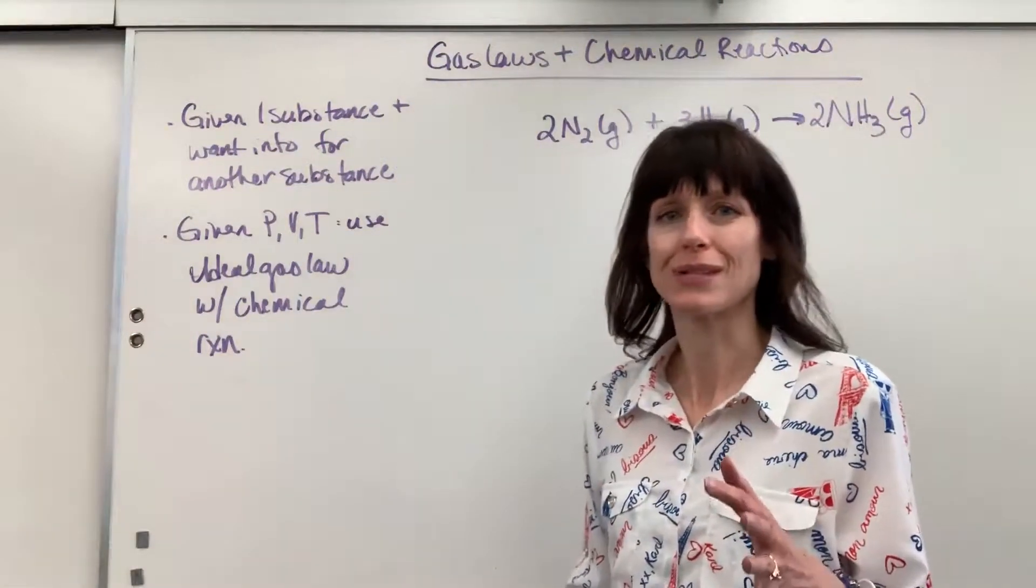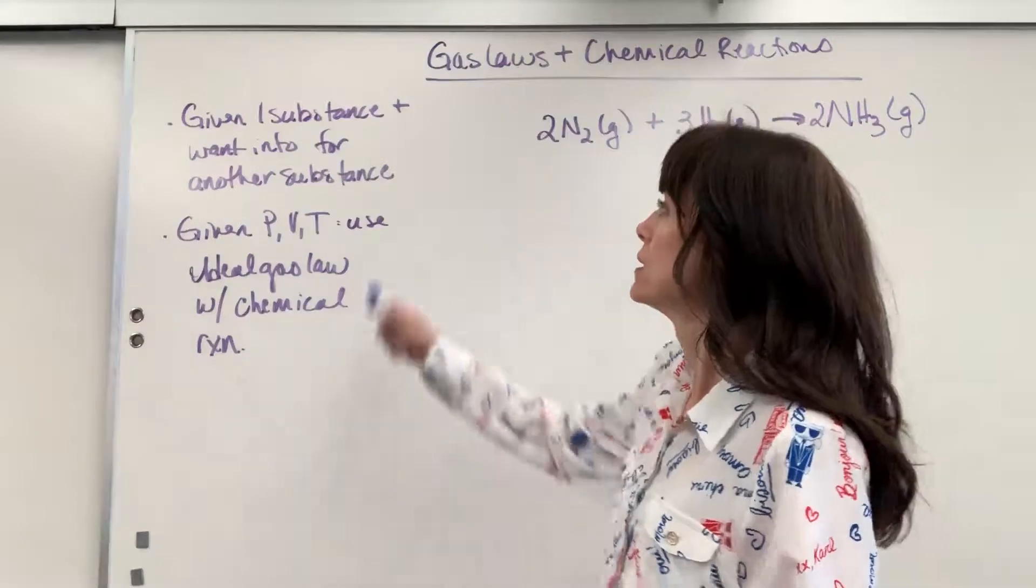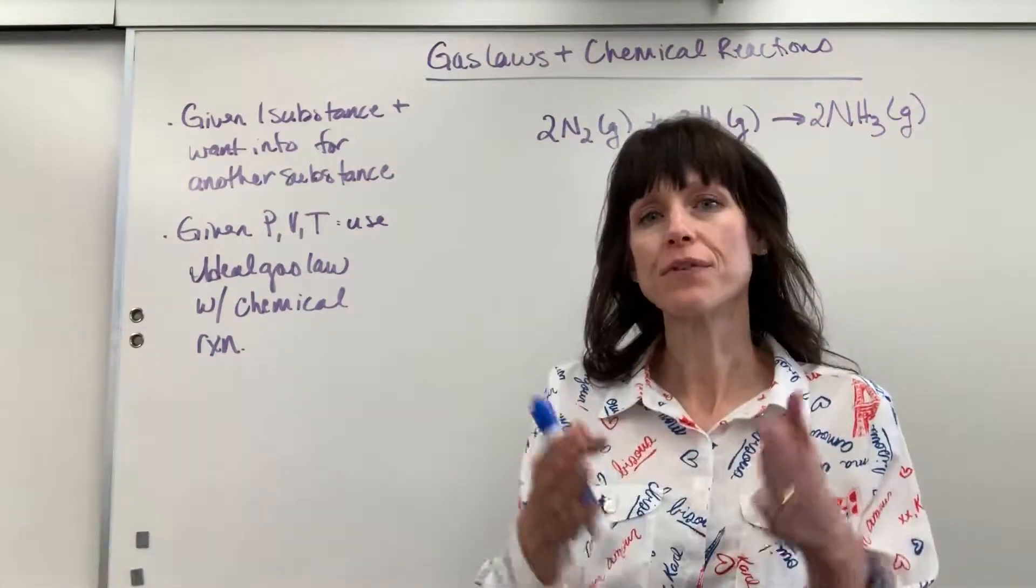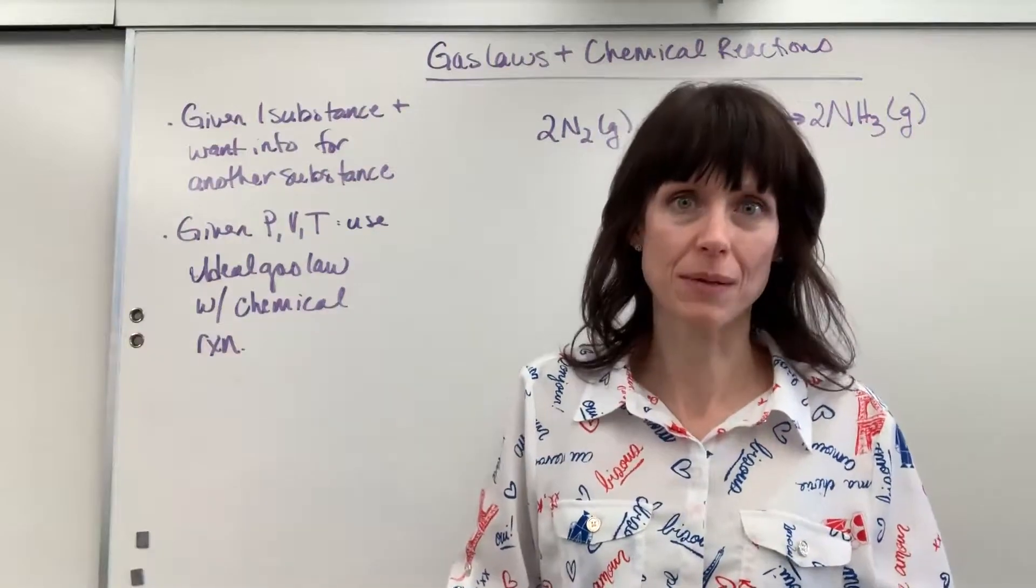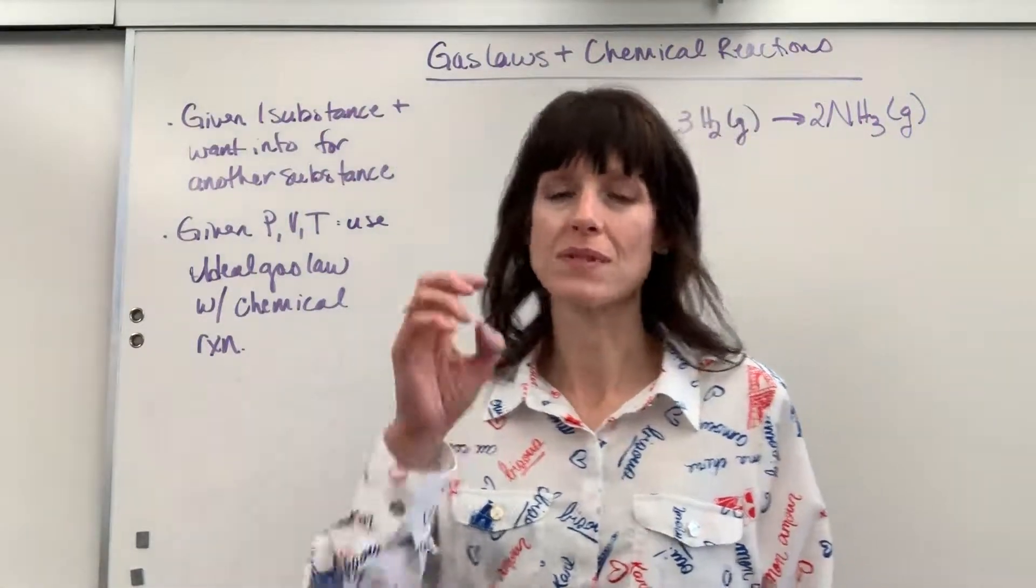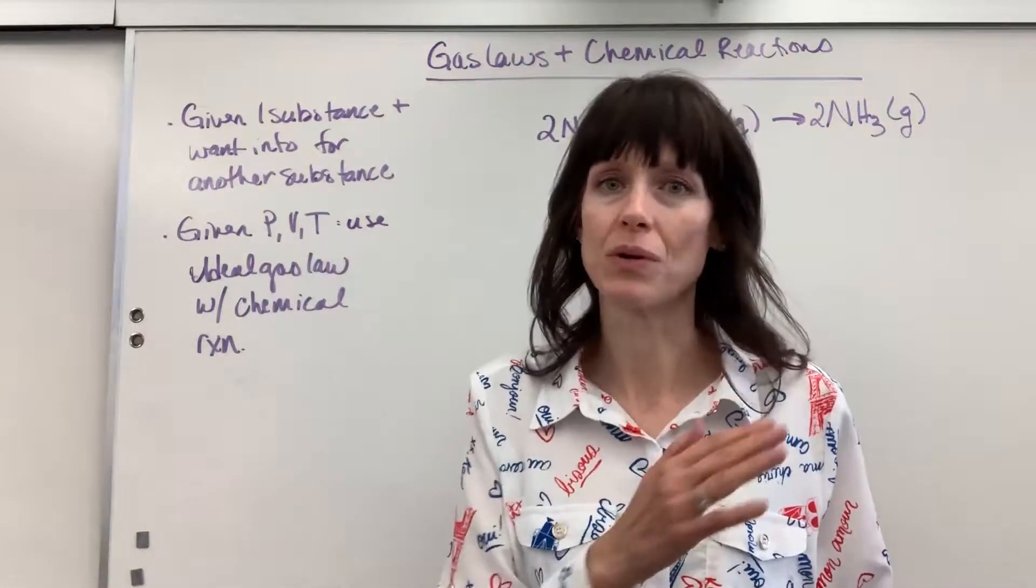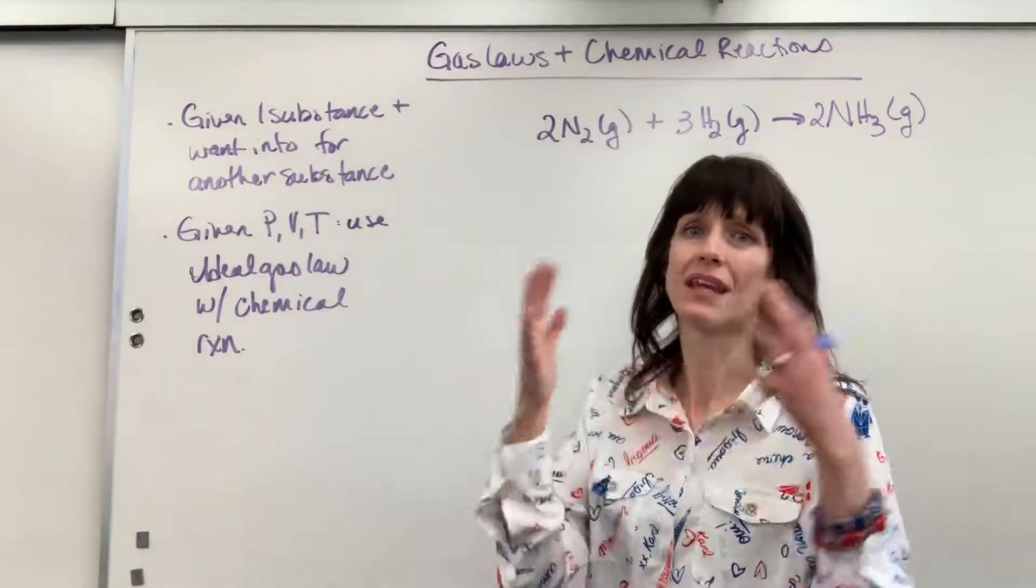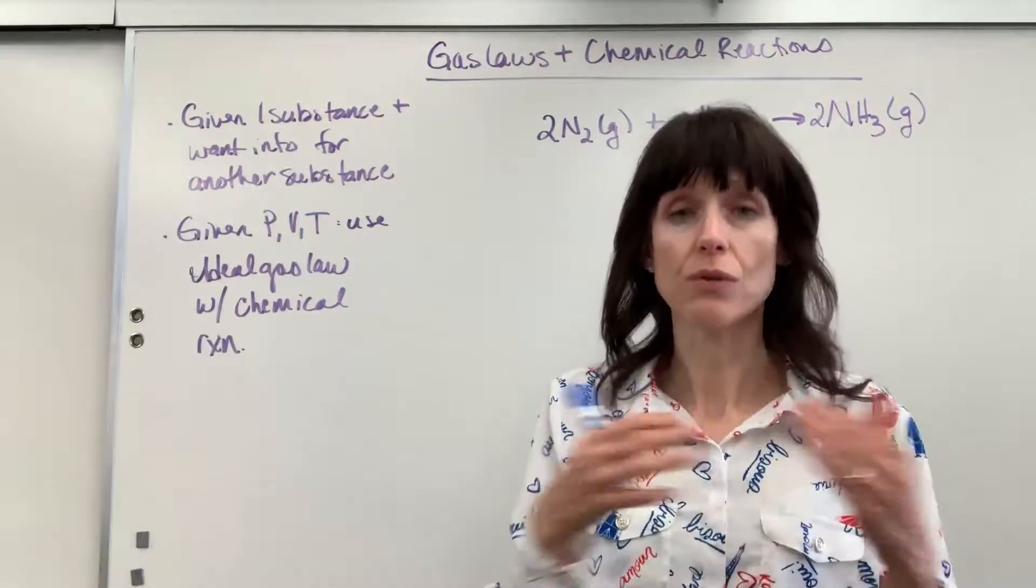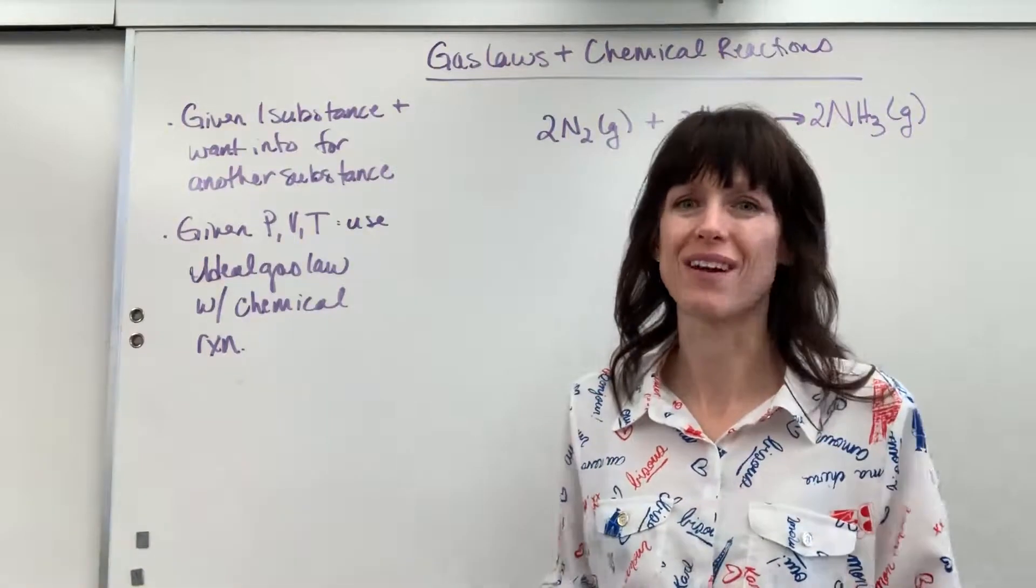Here are the clues that you're going to have to do stoichiometry and the ideal gas law. Number one, you're given information about a substance but the answer is for another substance. The only way you can go from substance A to substance B is by walking the bridge doing the molar ratio.